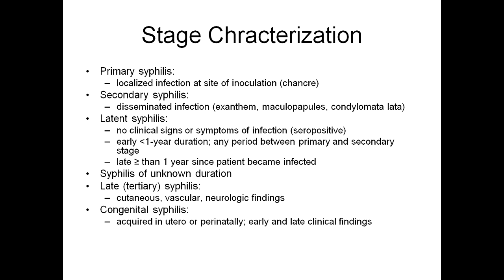Late latent syphilis is greater than or equal to one year since the patient became infected. Then there is syphilis of unknown duration and late — that is tertiary syphilis — which exhibits cutaneous, vascular, and neurological findings. Nowadays tertiary syphilis is very rare. Congenital syphilis is also not that common anymore; it is acquired in utero or perinatally, and early and late clinical findings may be seen.